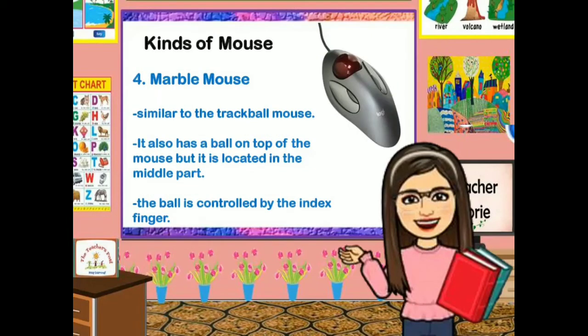The fourth one is the marble mouse. This is similar to the trackball mouse. It also has a ball on top of the mouse, but it is located in the middle part. The ball is controlled by the index finger.